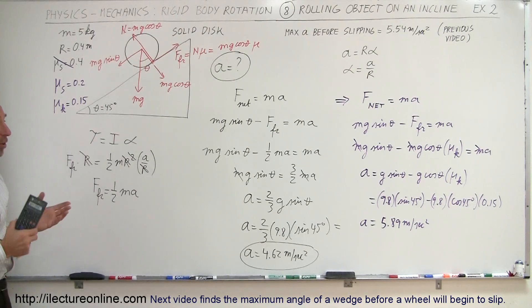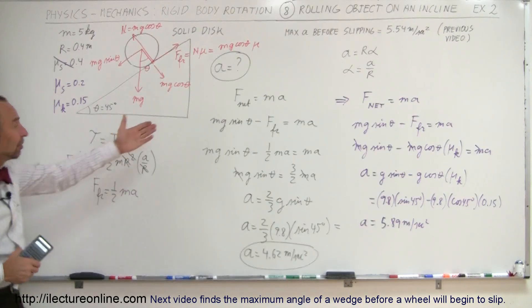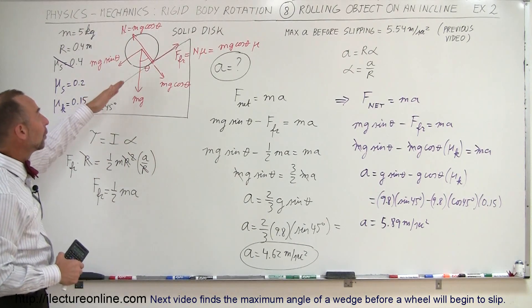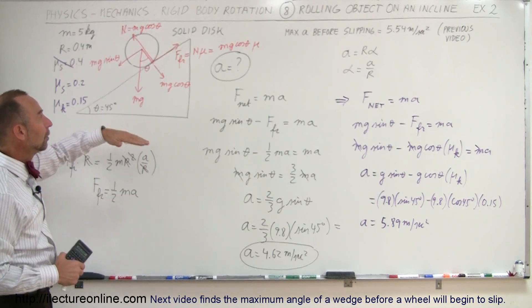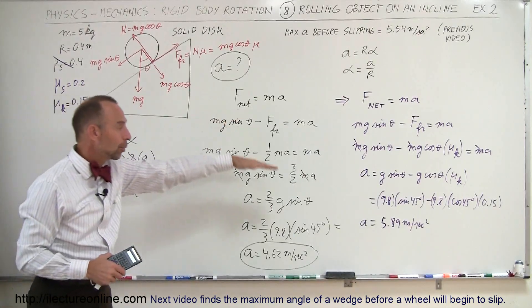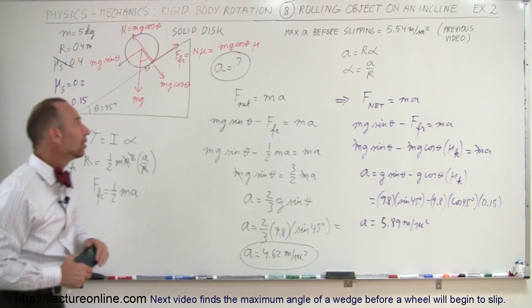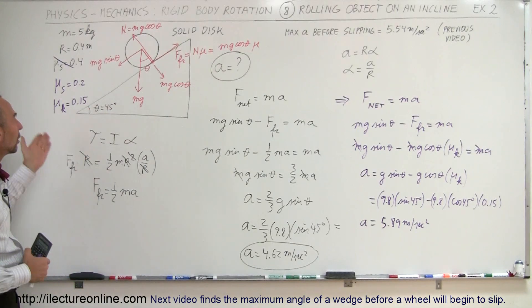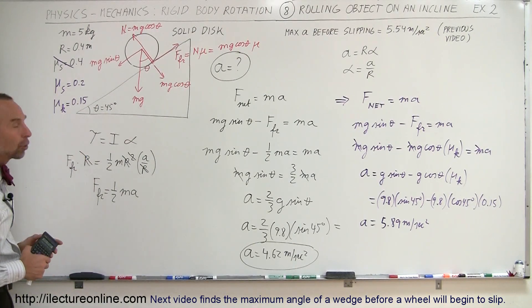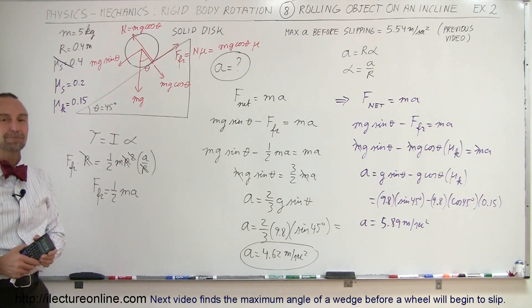In summary: in the case of the black writing, the wheel is rolling without slipping and the friction force equals ½mA. In the case of the purple writing, the wheel is slipping with a smaller coefficient of friction, and we use kinetic friction to find the acceleration.